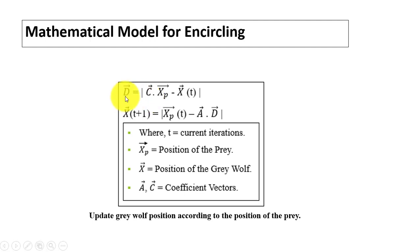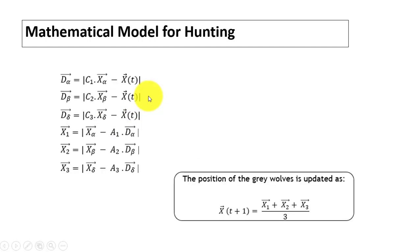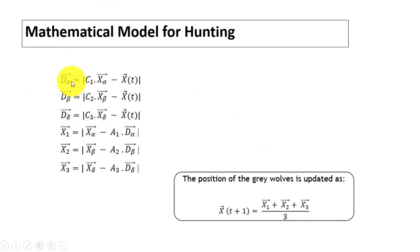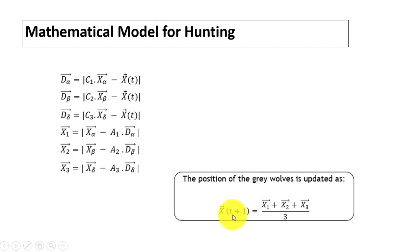In this model, A and C are coefficient vectors. For the hunting model, different equations define the distance vectors for alpha, beta, and delta. Then the positions X1, X2, X3 of the first, second, and third wolves are computed, and the gray wolf's position is updated using the average of these.